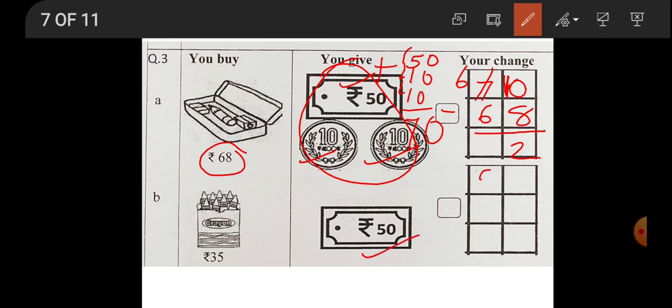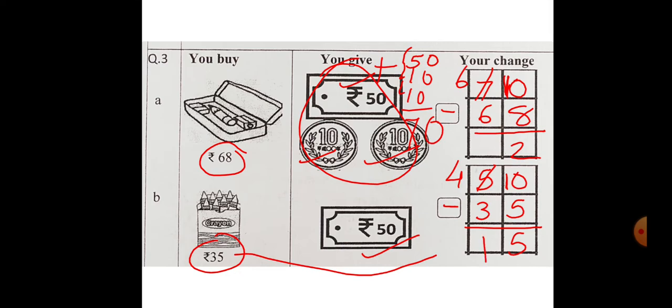50 rupees you are giving to the shopkeeper. You bought for 35. You will write 35 here. Now you have to minus. You give your change. Again 0 minus 5 you cannot do. 5 will become 4, give 1 to 0. 10 fingers up. 5 fingers down. How many left? Count 1, 2, 3, 4, 5. So write 5. 4 fingers up, 3 fingers down. And what is left? 1. So this is what you will get.